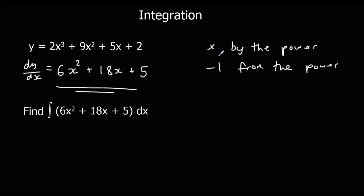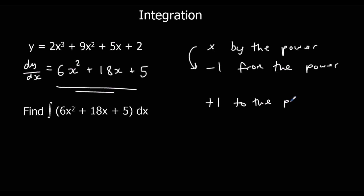So the process for differentiation: we times by the power and then we take 1 off the power. We're going to do the opposite to integrate — so we're going to do the opposite of minusing 1 from the power, meaning we add 1 to the power, and then the opposite of multiplying is dividing. So for integration, we add 1 to the power and then divide by the new power.